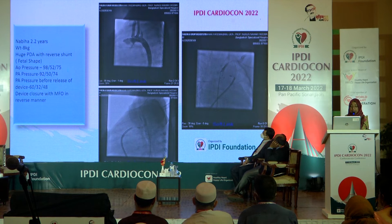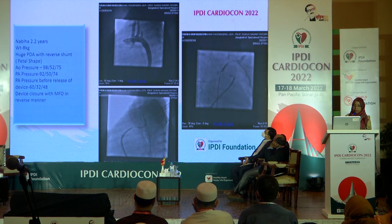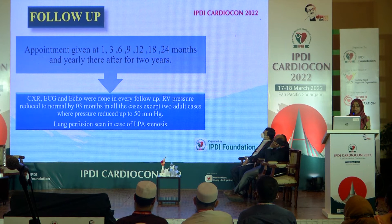The last case I am showing: Nabiha, 8 kg body weight, with a large PDA. If you see the PDA here, this is a type B PDA — a fetal type — where the pulmonary end is larger than the aortic end. If you place the device in the normal mechanism, there will be embolization. So we use the multifunctional occluder in reverse position, placing the aortic end on the pulmonary side. This is the position you can see, and this is the baby the day before discharge.